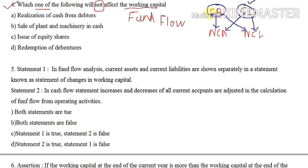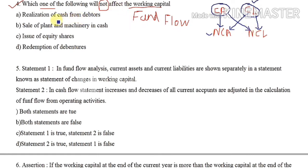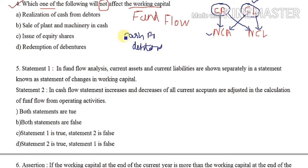Working capital is affected when one current item and one non-current item are involved. If both items involved are current, working capital is not affected. The first option is 'realisation of cash from debtors' — cash account and debtors account are both current items, so working capital is not affected.